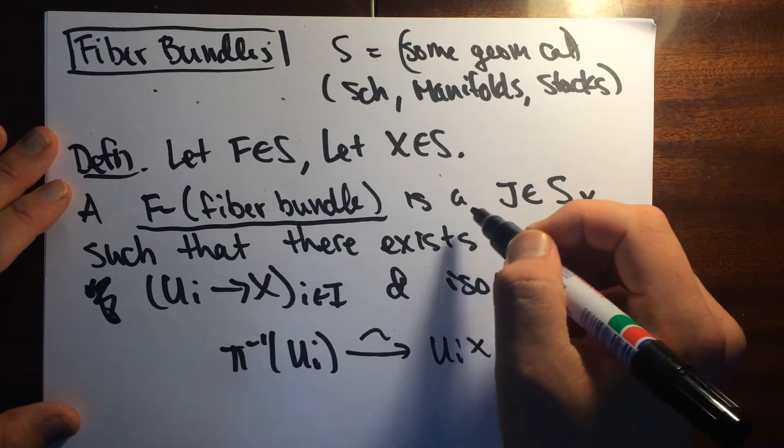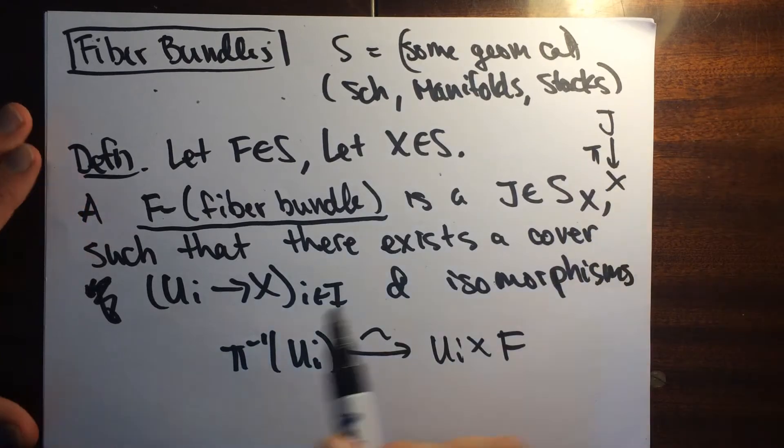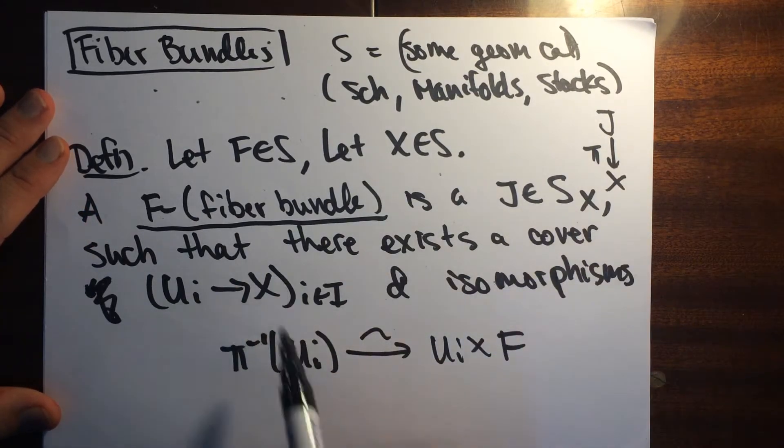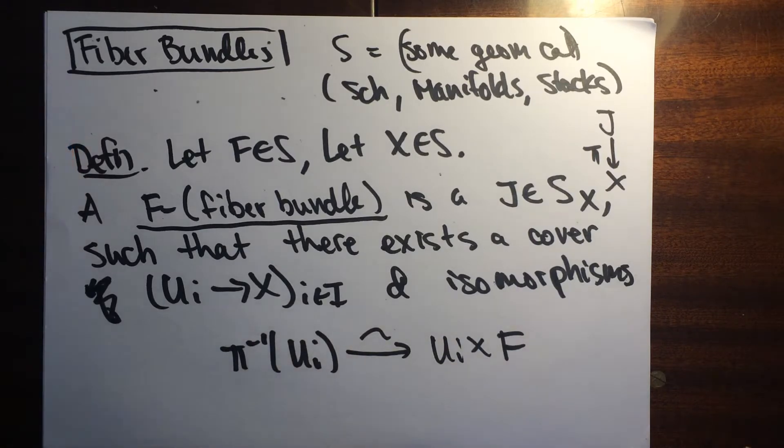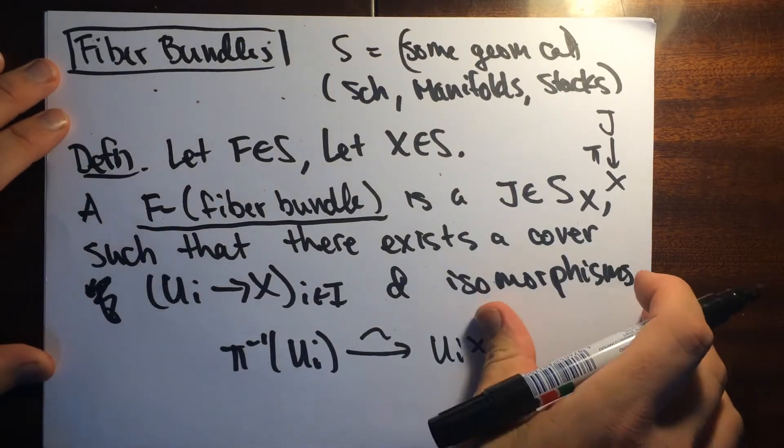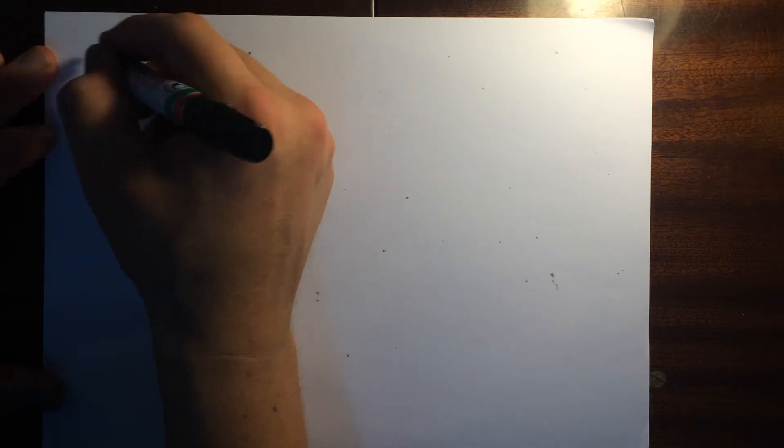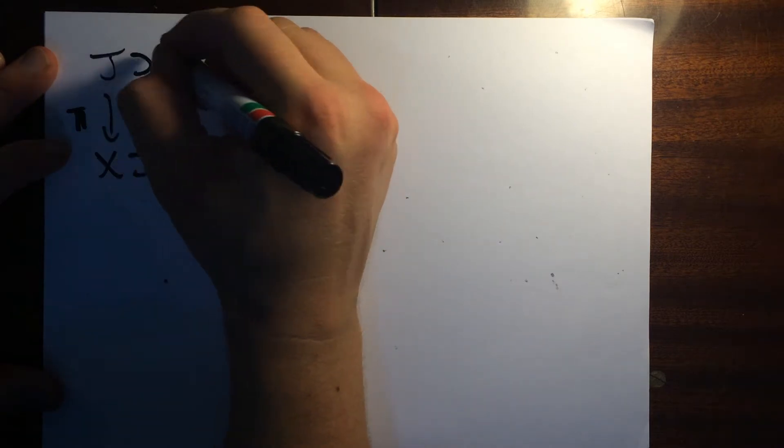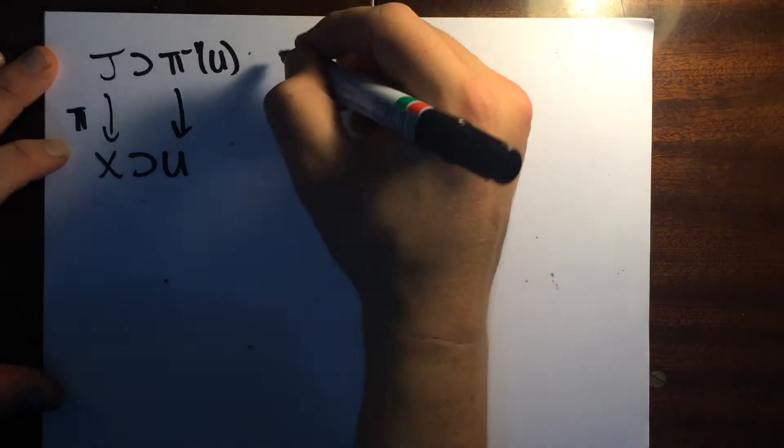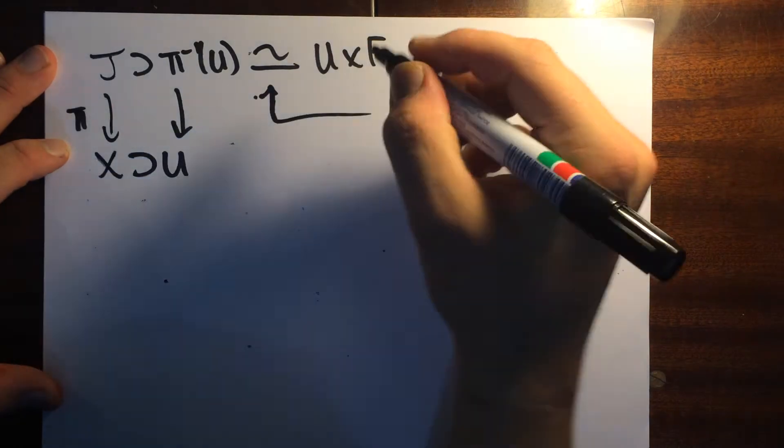The definition is that there exists a cover. First of all there's this thing sitting over X, so there's this map J to X, pi. What we're saying is that there's a cover so that each of the covers looks like this product here. Let me draw the standard picture. You always write J up here, here's X. Sometimes people write E's and P's. Here's pi and then we have an open set and we can take pi inverse of U. This sits over pi and then this thing here is U cross F. This thing here is called a trivialization.